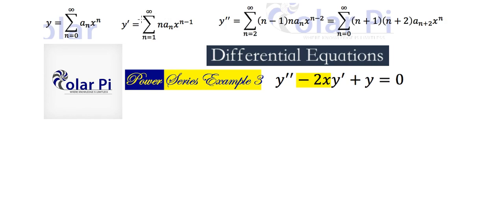So y prime will have to look like this, and y double prime will subsequently be this. Now we can rewrite y double prime so that instead of starting at n equals 2, it starts at n equals 0, and if we do that, we'd have to rewrite it in this way.